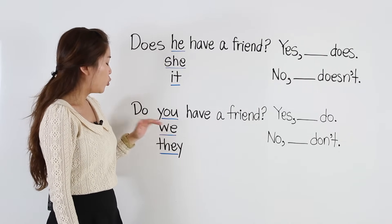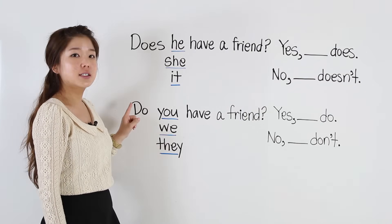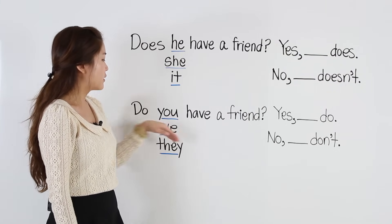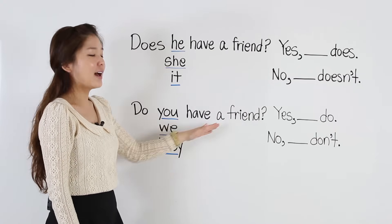Now, when we use you, we, they, we use do in the front and have after. Do you have a friend? Do we have a friend? Do they have a friend?